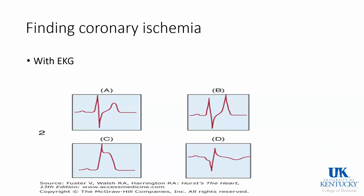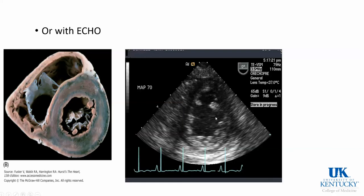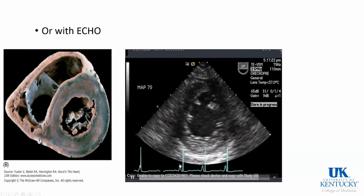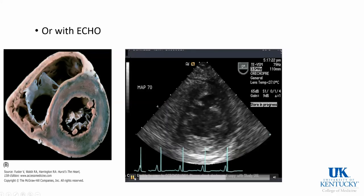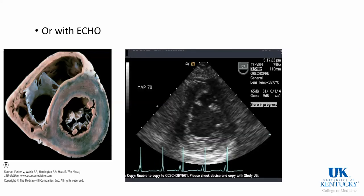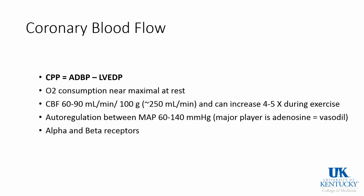We can also look on EKG to see what leads correlate with each territory. Looking at this EKG image we see normal in the first, then some ST elevations, a Q wave, and possible ischemia in another. In the OR we can use echo to help look at the heart — this picture shows a patient on ECMO and the heart is not beating very well.